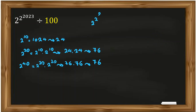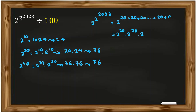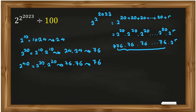So here we have 2 to the 2 to the 20 to the 23. We know if we write the exponent as 20 plus 20 plus 20, and so on — some number of 20s plus a remainder R — it will be 2 to the 20 times 2 to the 20 times 2 to the 20... all of them, times 2 to the R. All the 2-to-the-20 terms contribute 76 each, and 76 times 76 times 76... the last two digits remain 76. So we're left with 76 times 2 to the R.